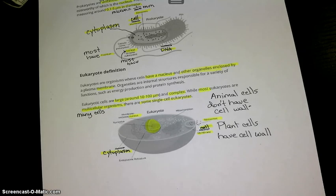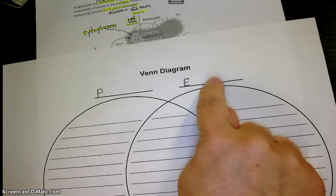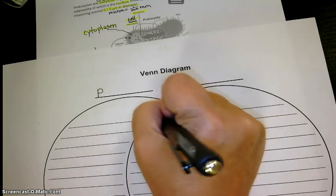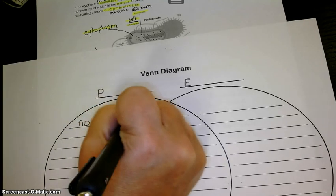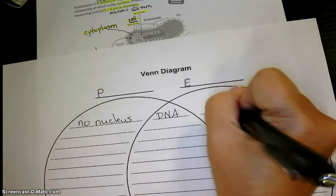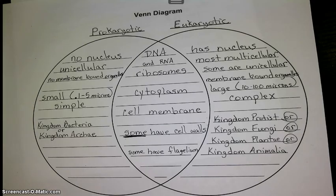So you're going to complete a Venn diagram, and the Venn diagram, you're going to fill in prokaryotic, eukaryotic. This is everything they have in common. They both have DNA. This one has no nucleus. Main difference, this one has a nucleus. And then we watched the video on Google Classroom, and we added the kingdoms that they can, if it's prokaryotic, it's going to be kingdom bacteria or kingdom archaea. If it's eukaryotic, it'll be either protist, fungi, plantae, or animalia.